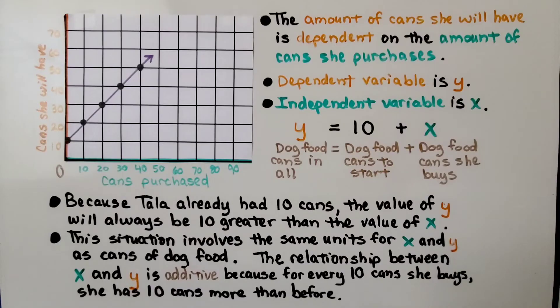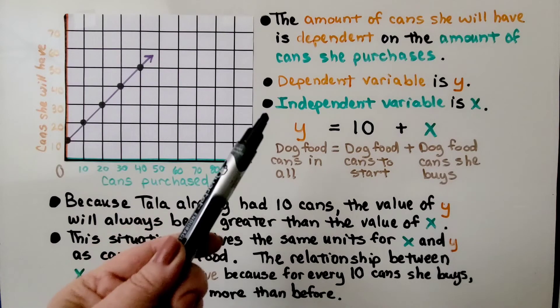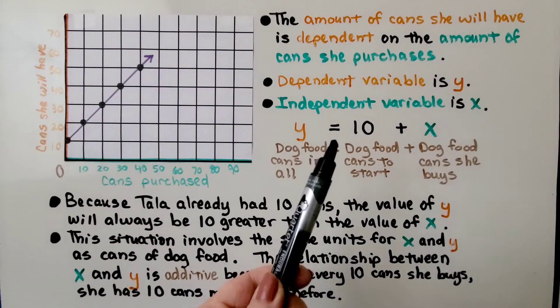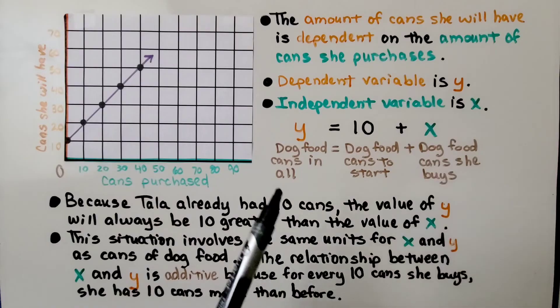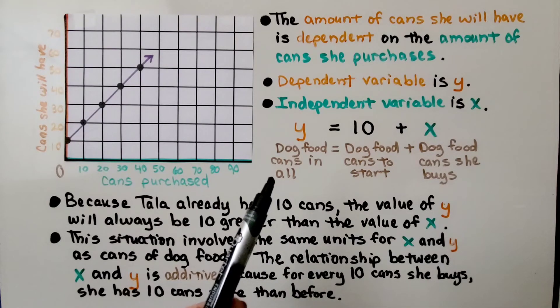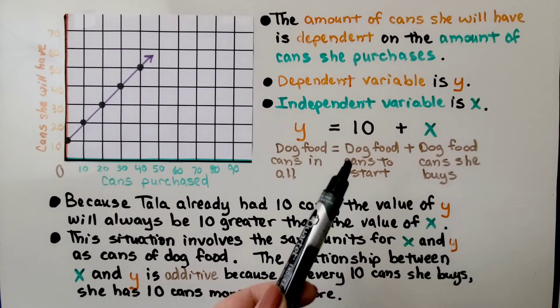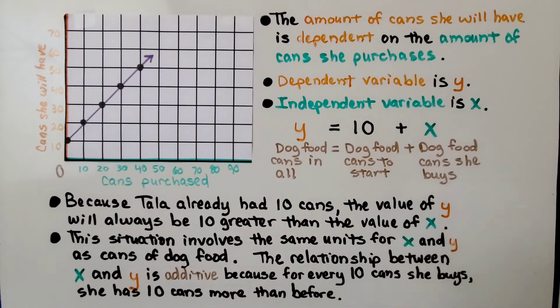The amount of cans she will have is dependent on the amount of cans she purchases. The dependent variable is y. The independent variable is x. We have y is equal to 10 plus x. That's the dog food cans in all is equal to the dog food cans she had to start. She started with 10 plus the dog food cans she buys.